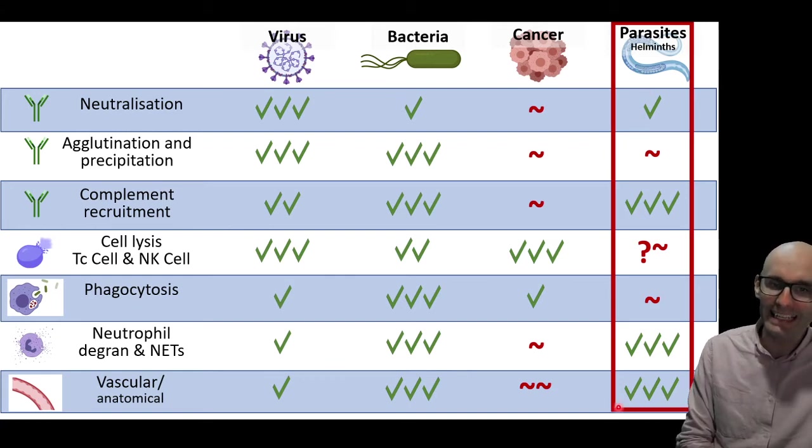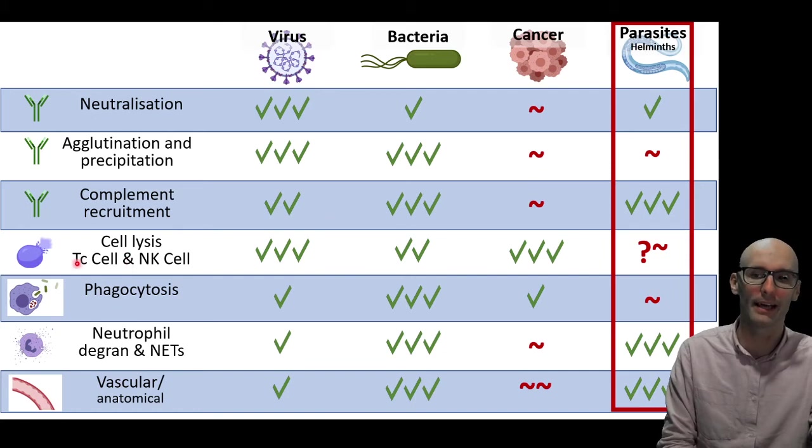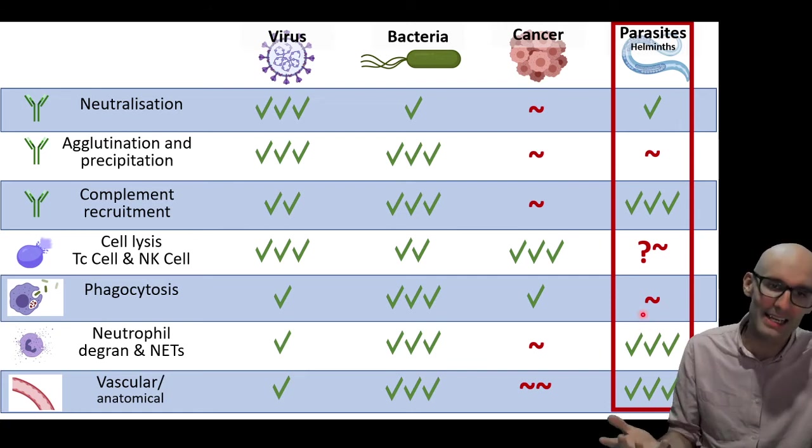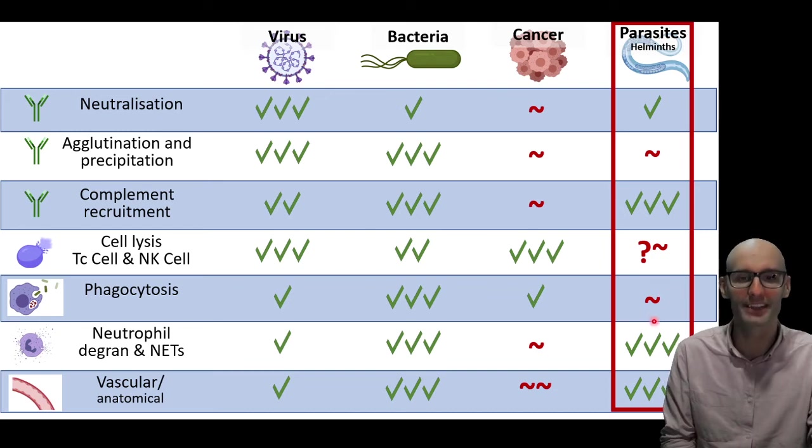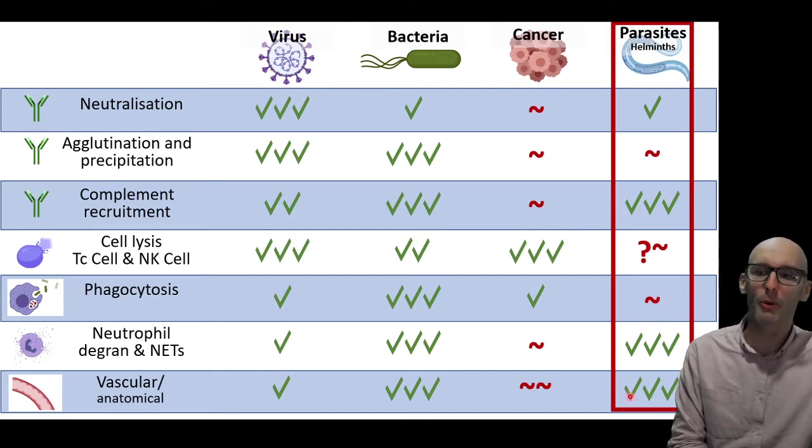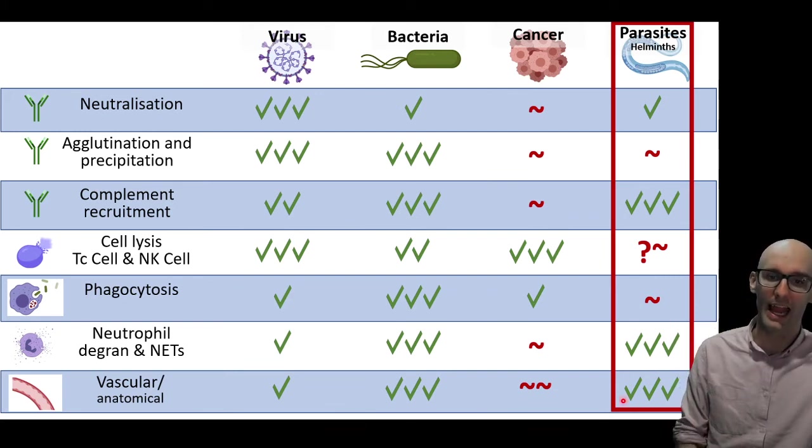So we want these kinds of responses. We want a bit of an antibody response here because the antibodies are quite good at dealing with parasites. We really don't care about TC cells here or natural killer cells in this response. They're not a major player, or phagocytosis, because we can't phagocytose a giant nematode, right? So we're not dealing with that. But we do need neutrophil, and I would like to add eosinophil degranulation in here and vascular anatomical responses.